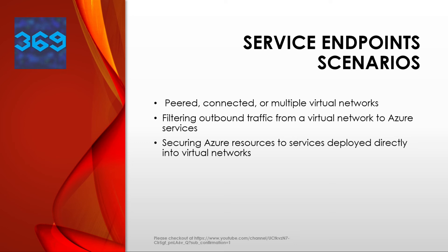Next scenario is securing Azure resources to services deployed directly into virtual networks. You can directly deploy various Azure services into specific subnets in a virtual network and secure Azure service resources to managed service subnets by setting up a service endpoint on the managed service subnet. Also, disk traffic from an Azure virtual machine — traffic for managed and unmanaged disks is not affected by service endpoint routing changes for Azure Storage. This traffic includes disk IO as well as mount and unmount operations. You can limit REST access to page blobs to select networks through service endpoints and Azure Storage network rules.